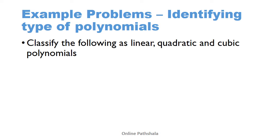Now let us solve some problems in identifying the type of polynomials. We already learned what linear, quadratic, and cubic polynomials are, and just to remind you, this is based on degree. Linear polynomials have degree one, quadratic have degree two, and cubic have degree three. That is what you need to remember to solve these kinds of problems.